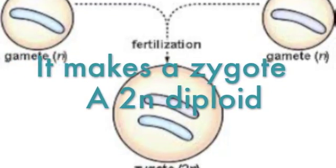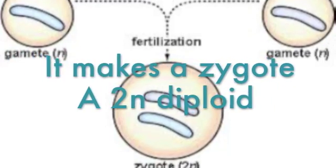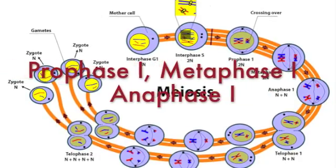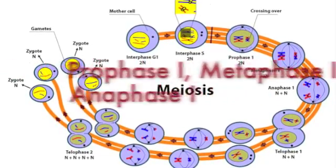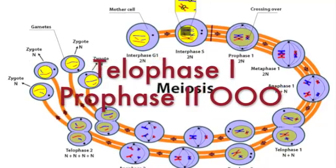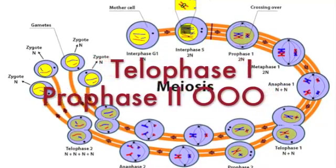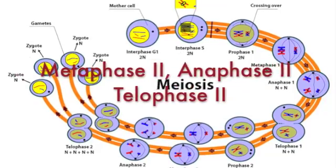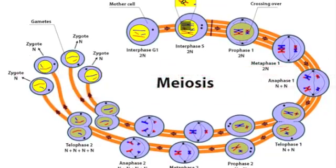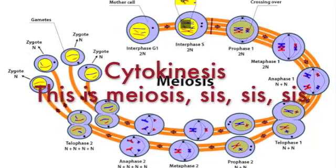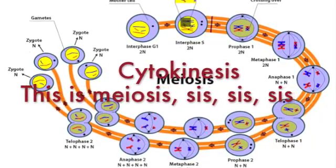The stages of meiosis are: Prophase 1, Metaphase 1, Anaphase 1, Telophase 1, Prophase 2, Metaphase 2, Anaphase 2, Telophase 2, and Cytokinesis. This is meiosis.